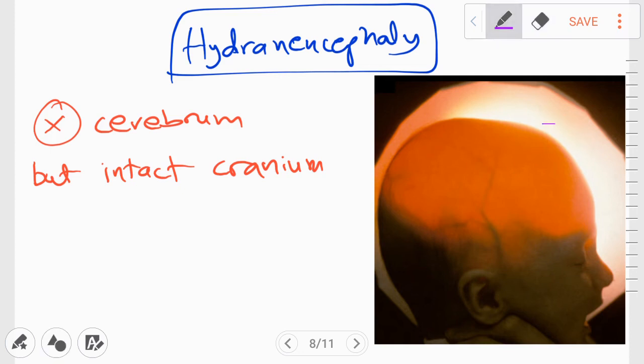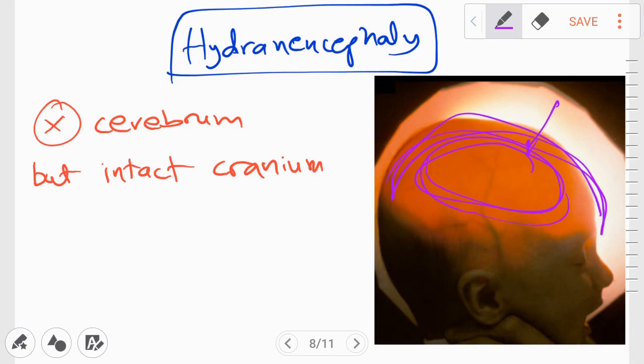So here you can see that if you shine a light right through the cranium, you'll see that the light passes right through. So there is really no brain within this cranium, but the cranium itself is intact. But in anencephaly, both the cranium and brain were affected.